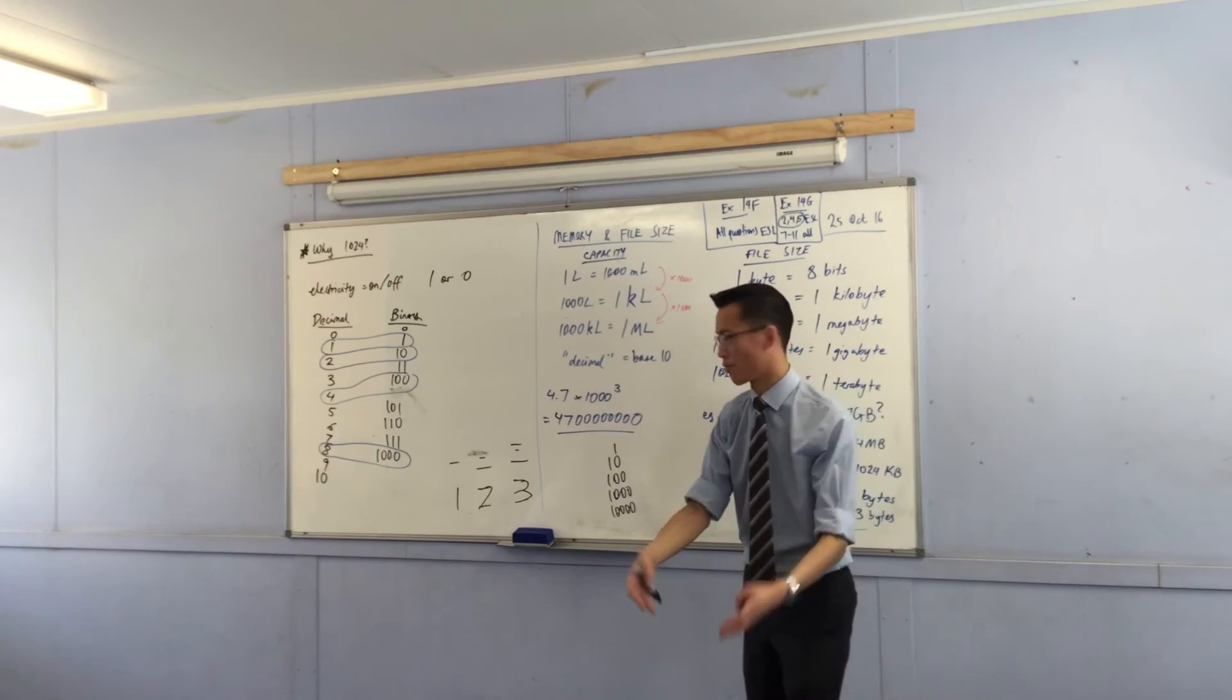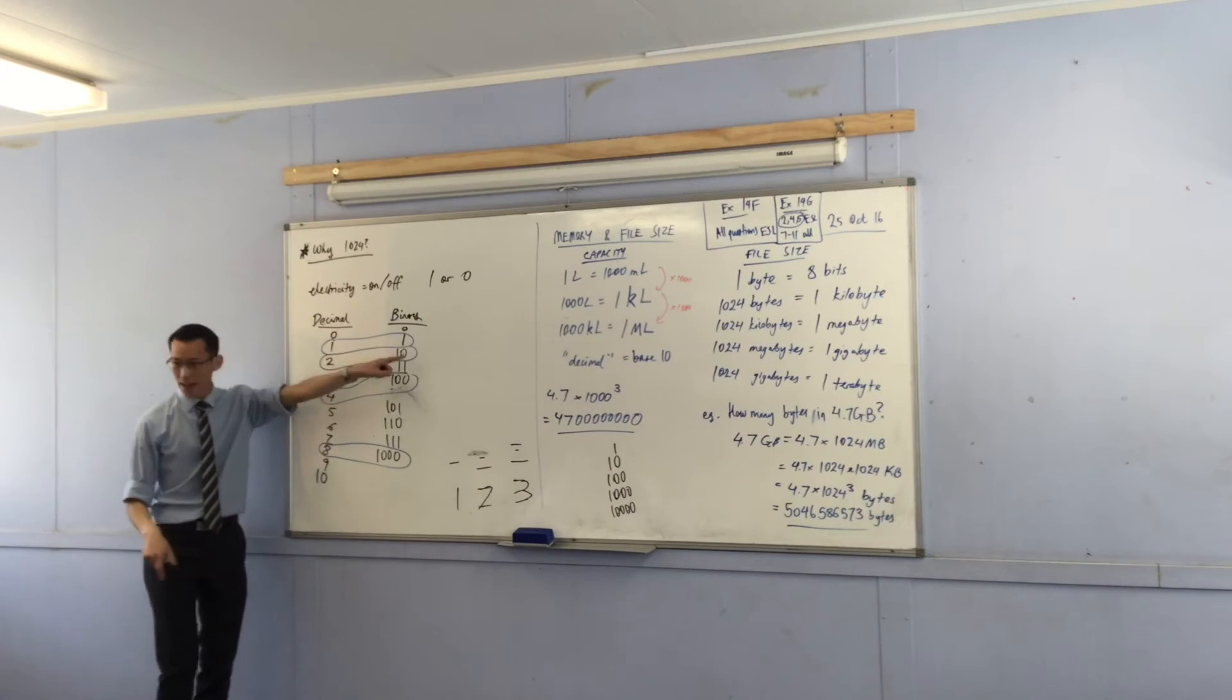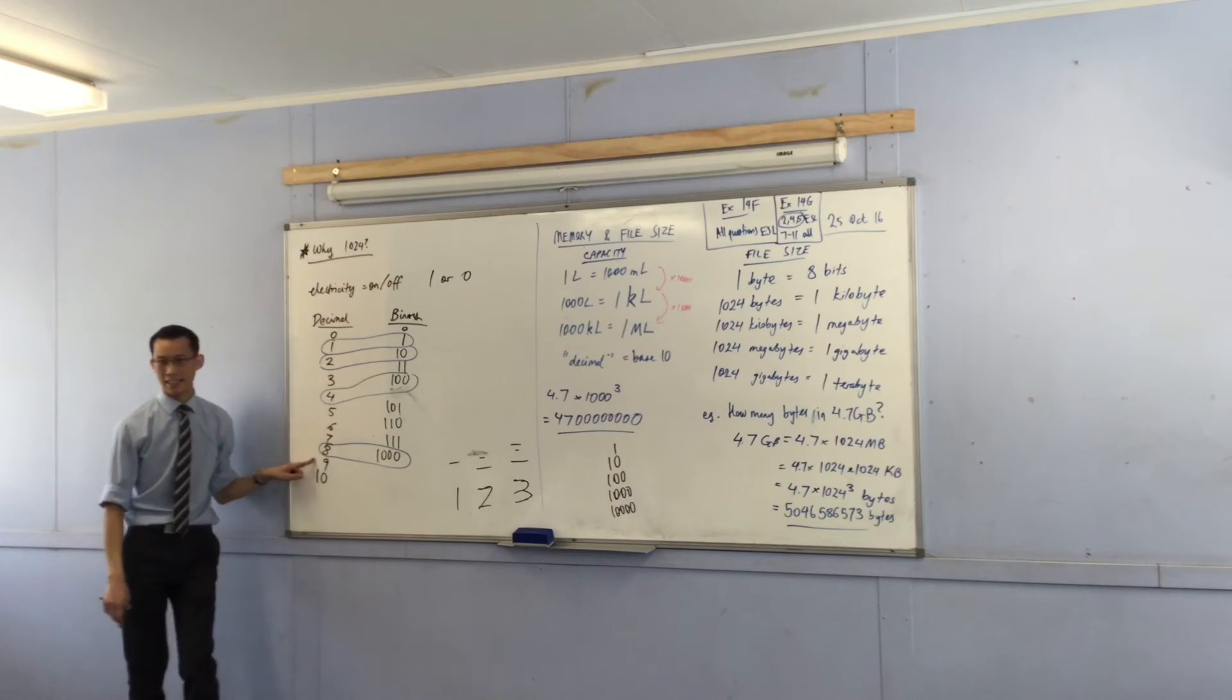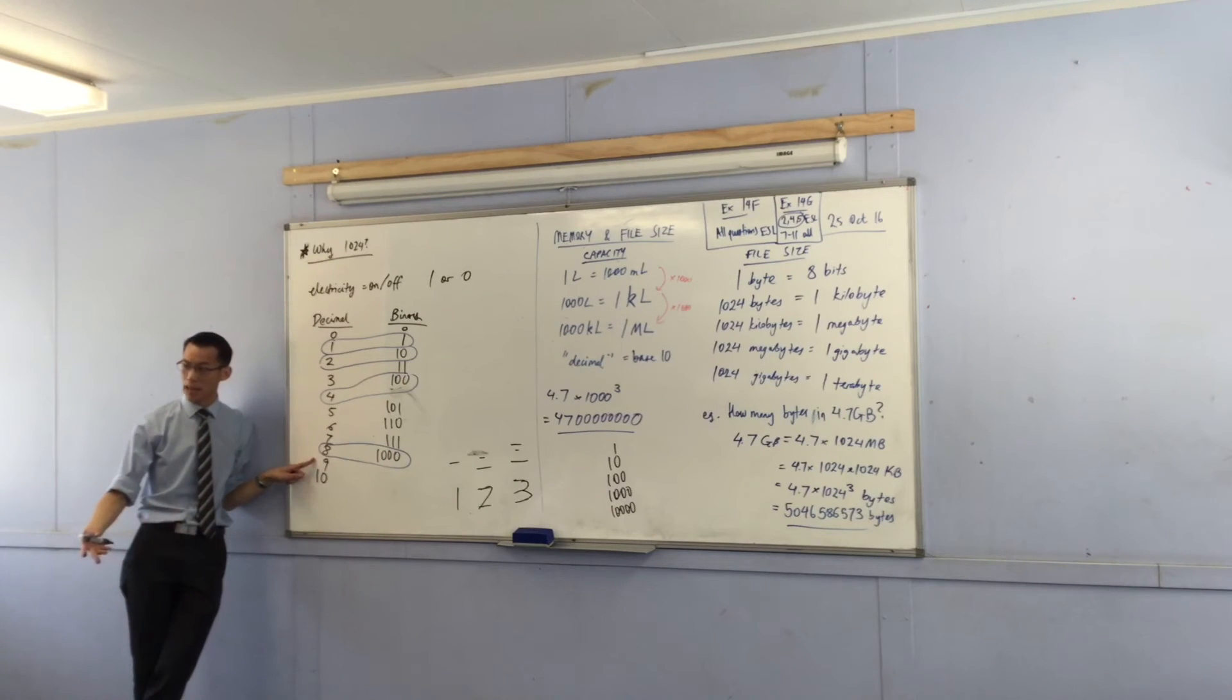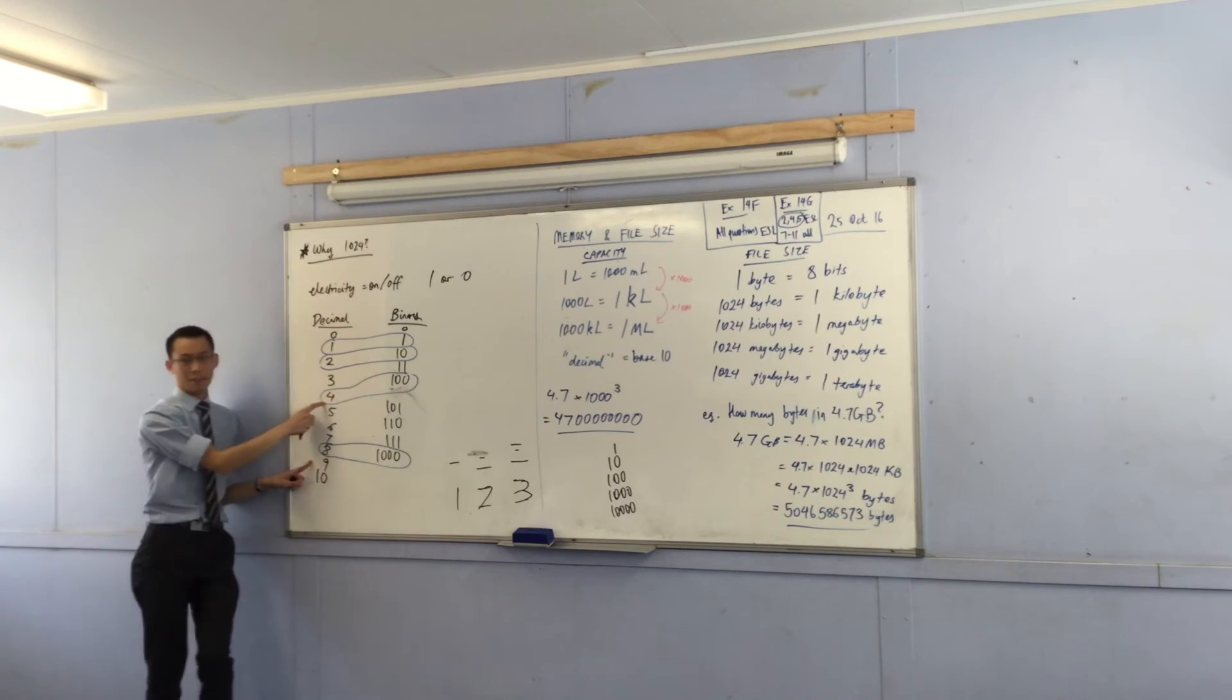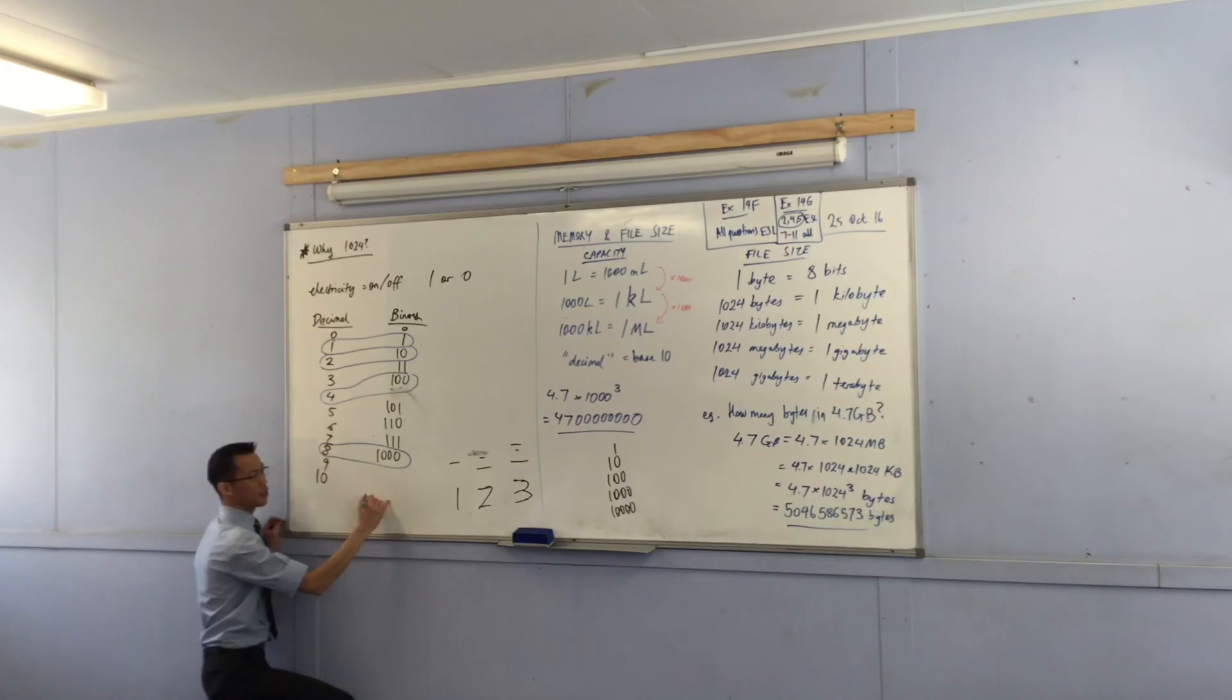But every time you add a new digit in binary you don't get ten times bigger. Look at the numbers that I've outlined here. Instead of getting ten times bigger, you get twice as big. You see, I've added a new digit and now I'm two. I've added a new digit, now I'm four. I've added a new digit, now I'm eight.